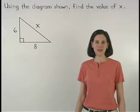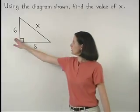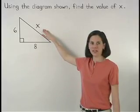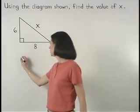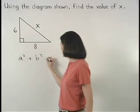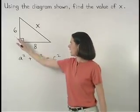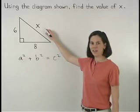The Pythagorean Theorem states that the sum of the squares of the lengths of the legs of a right triangle is equal to the square of the length of the hypotenuse, or a squared plus b squared equals c squared, where a and b are the legs of the right triangle and c is the hypotenuse.